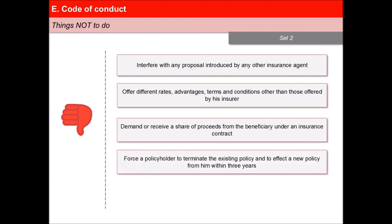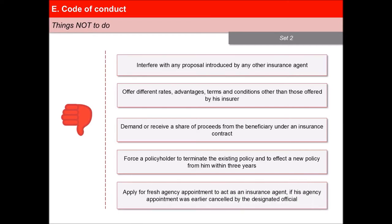The agent should not force a policyholder to terminate the existing policy and to effect a new policy from him within three years from the date of such termination of the earlier policy, or apply for fresh agency appointment to act as an insurance agent if his agency appointment was earlier cancelled by the designated official.